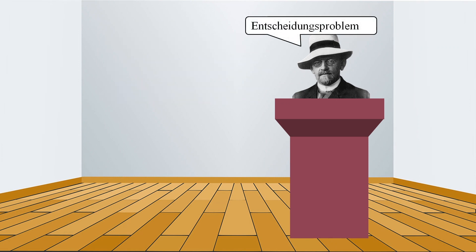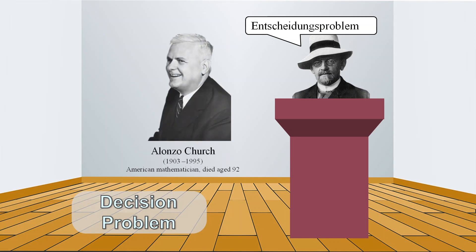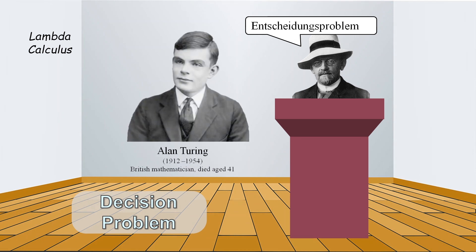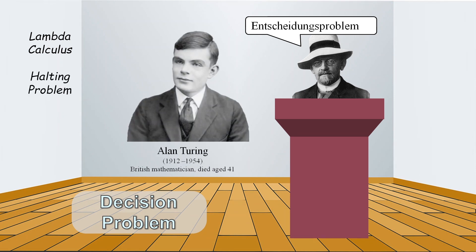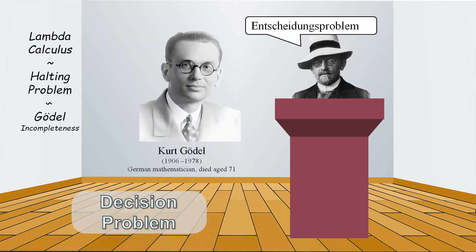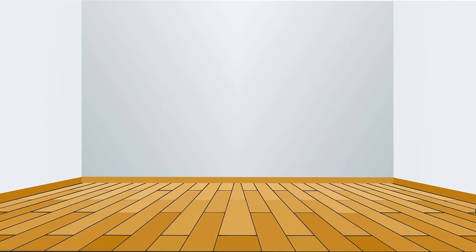The decision problem was addressed in 1936 by the American Alonzo Church with something called lambda calculus, and in the same year by Alan Turing with something called the halting problem. These two solutions are thought to contain equivalent logic, just expressed in different forms, and the underlying logic is considered to be closely related to Kurt Gödel's incompleteness theorems of 1931.